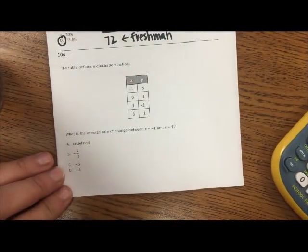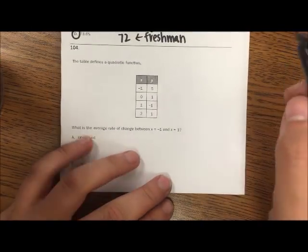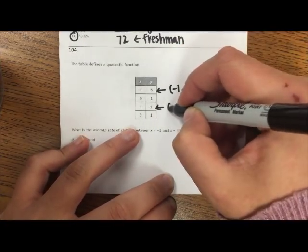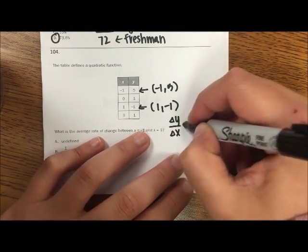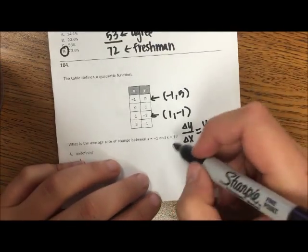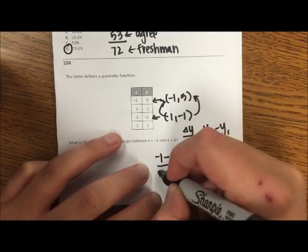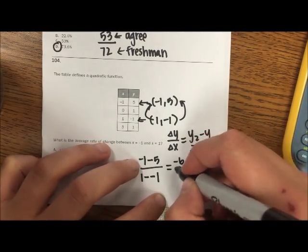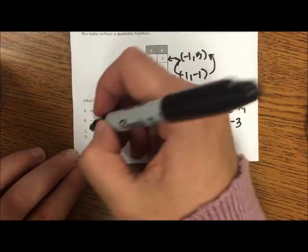And then finally, in number 104, the table defines a quadratic function. What is the average rate of change between negative 1 and 1? So let's create points and let's find our change in Y divided by our change in X, which is just our slope formula. So negative 1 minus 5 divided by 1 minus negative 1. So that would be negative 6 over 2, which is negative 3, which would be C.